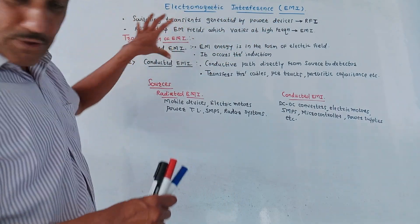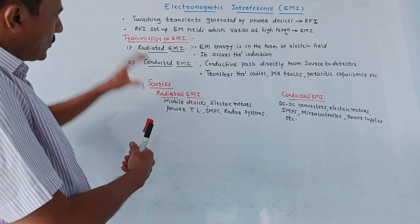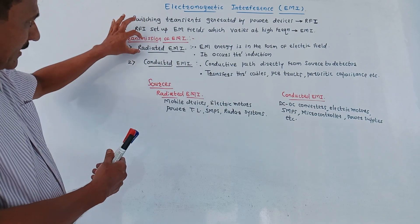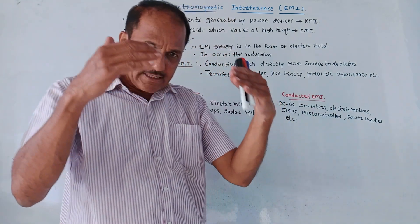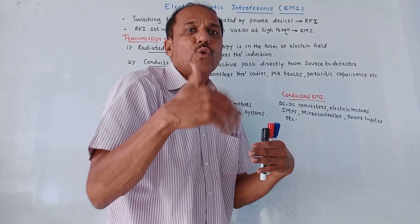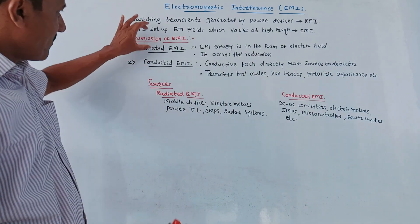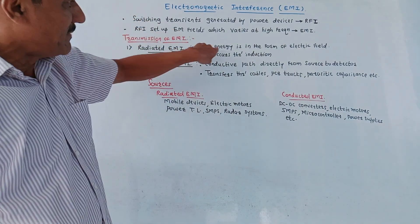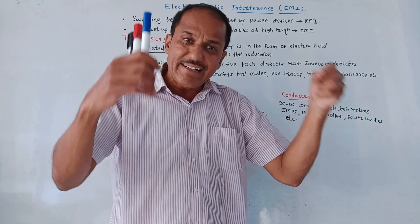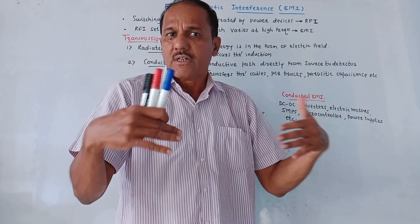Now, how does the transmission of EMI take place — how does EMI get transmitted from one point to another? There are two techniques: first is radiated EMI and second is conducted EMI. In case of radiated EMI, the electromagnetic interference gets transferred from one point to another due to radiation, that is through induction and not directly through conduction. The electromagnetic energy is in the form of an electric field and it occurs through induction.